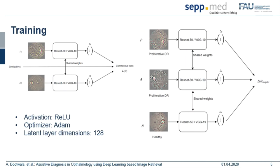We train the network such that images belonging to similar pathologies are closer to each other in the latent space, while images with different pathologies remain apart.